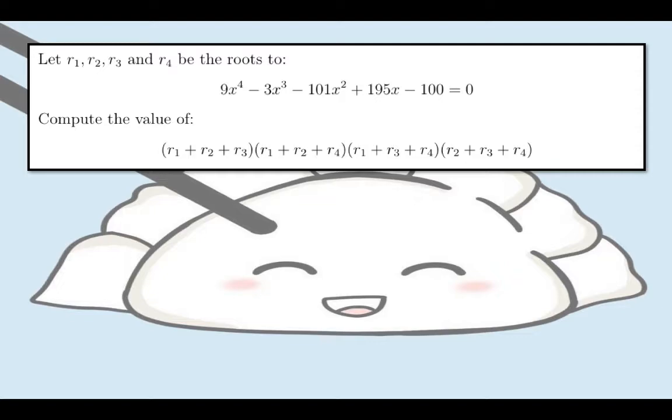This is the problem. Let r sub 1, r sub 2, r sub 3, and r sub 4 be the roots to 9x to the 4th minus 3x cubed minus 101x squared plus 195x minus 100 equals 0.